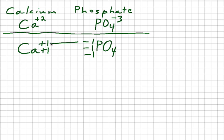Or in other words, the plus one plus a minus one equals zero. And in any ionic compound, we want all the charges to add up to equal zero.